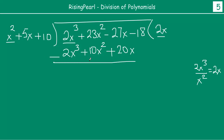We subtract this product from the dividend. So 2x cubed cancels out. Then 23x squared minus 10x squared gives us 13x squared. And then minus 27x minus 20x becomes minus 47x, minus 18. So this becomes our new dividend: 13x squared minus 47x minus 18.